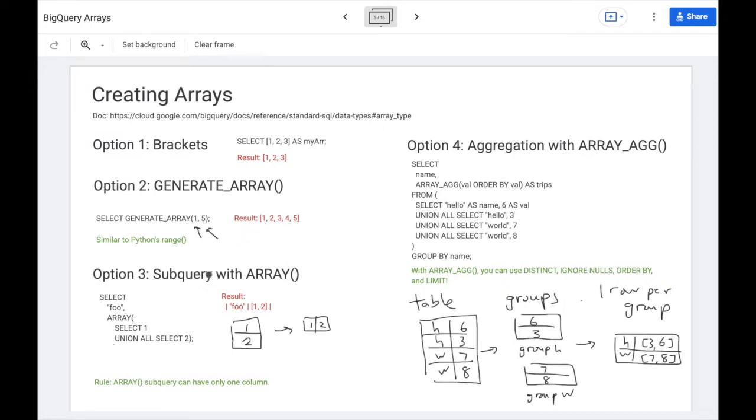So generate array works similarly to Python's range. You can specify a start point and end point and get an array of all the numbers in between. A third option is to use the array function with a subquery. So this is the array function. The subquery is any sort of table you can define. I just have a simple one here that union's all one and two.